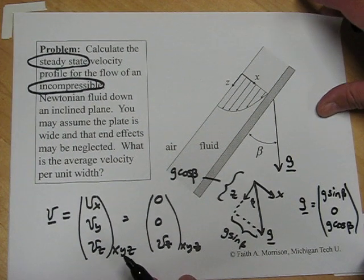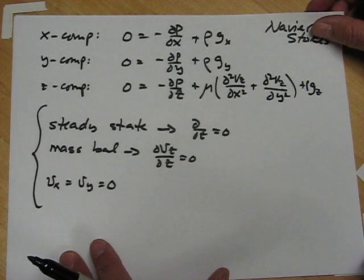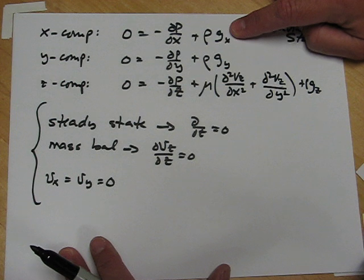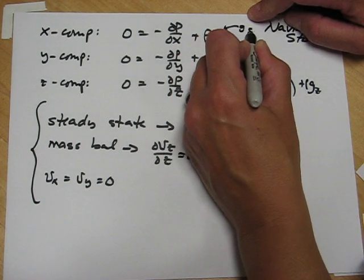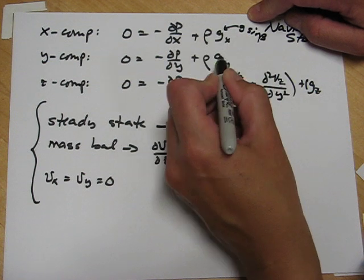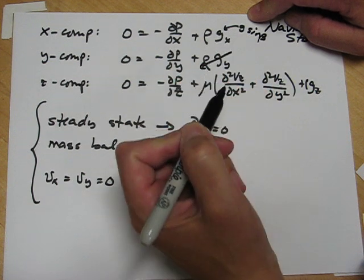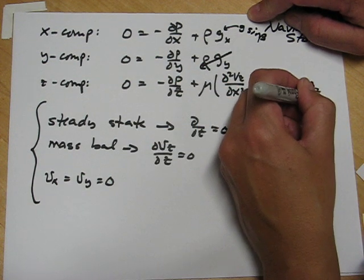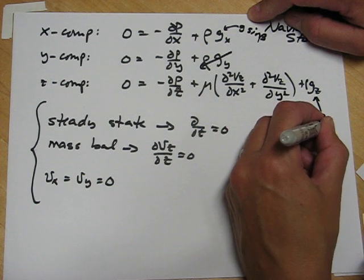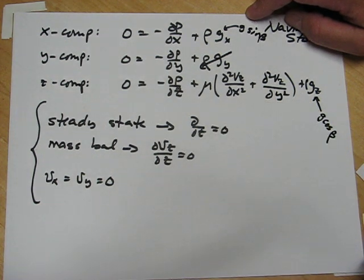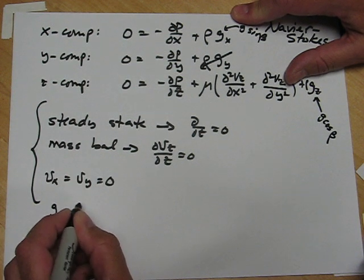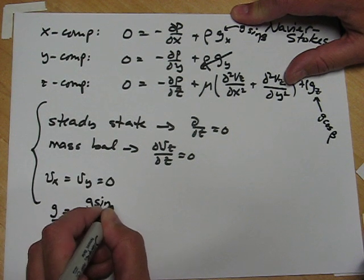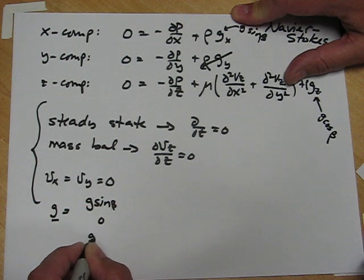So if we go back to our simplified Navier-Stokes equations, we now know that gx is g sine beta, gy is zero, and gz here is g cos beta. So all we did was use our g written in our coordinate system as g sine beta, zero, g cos beta.